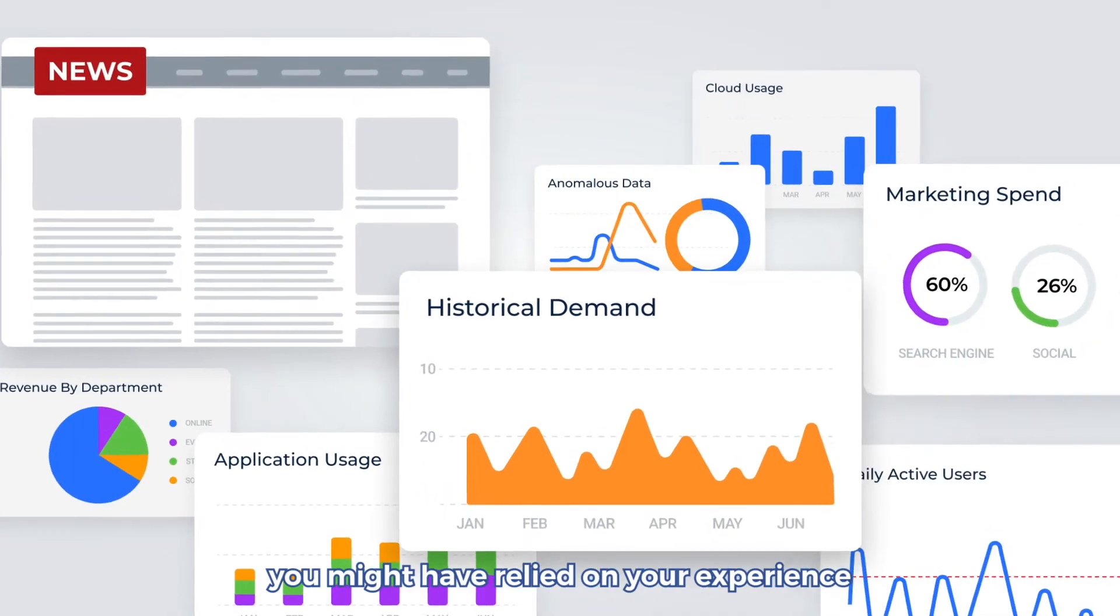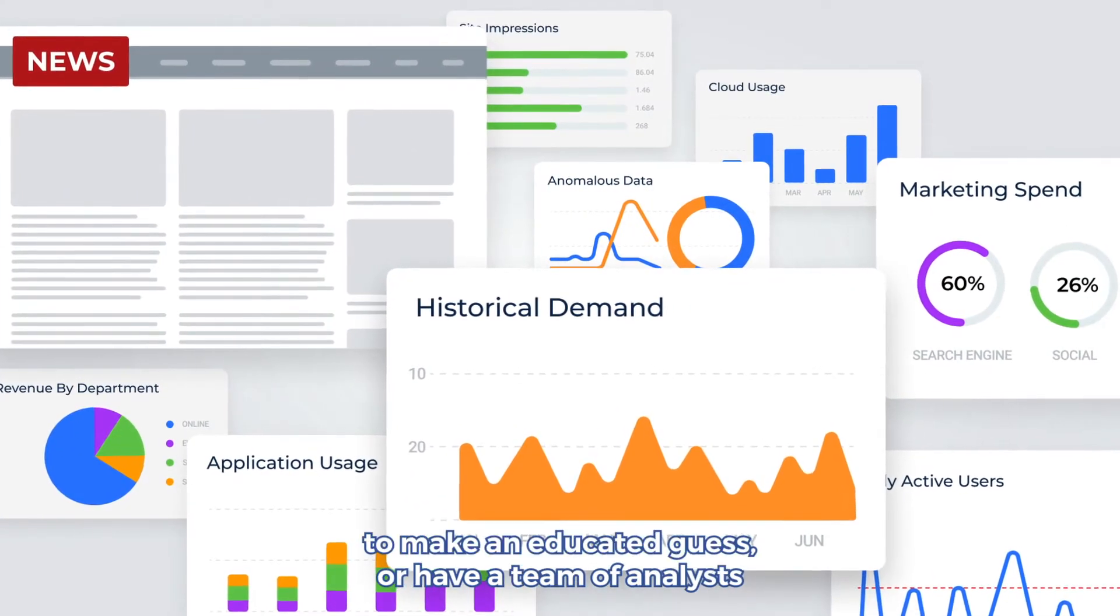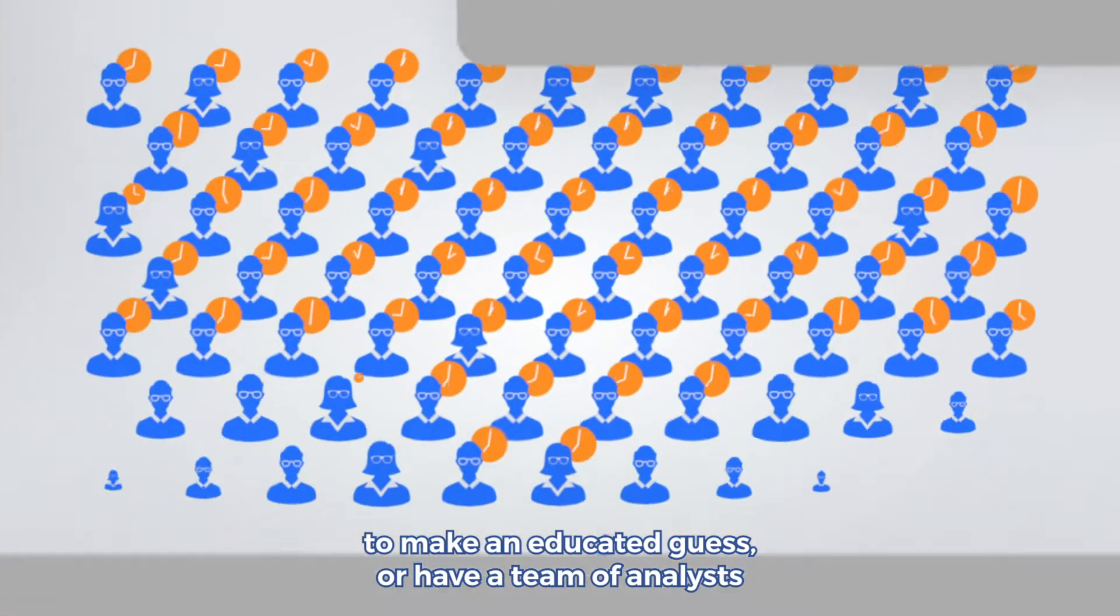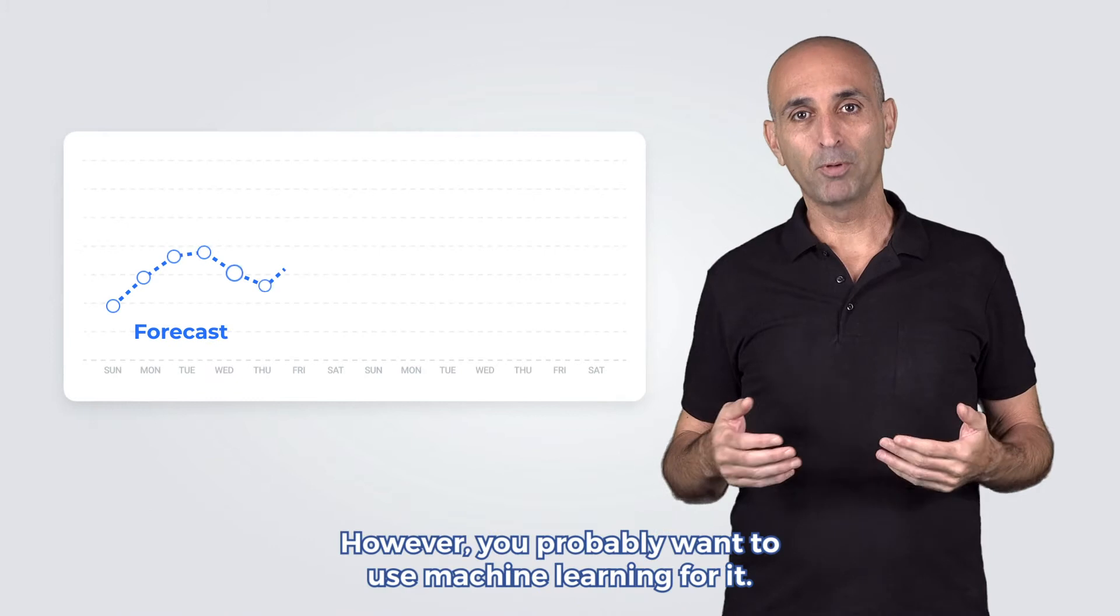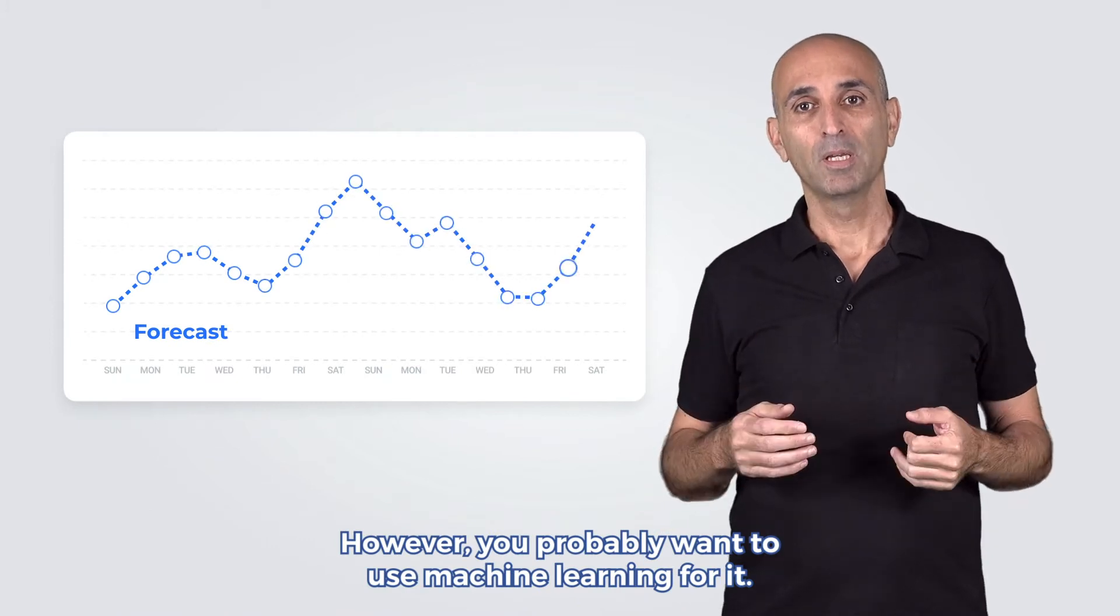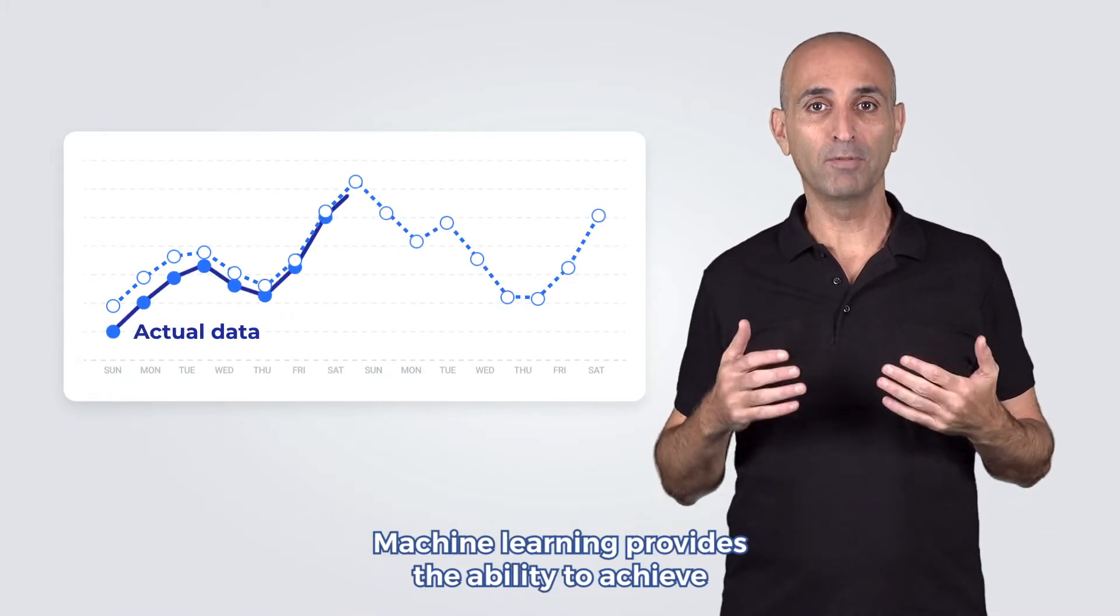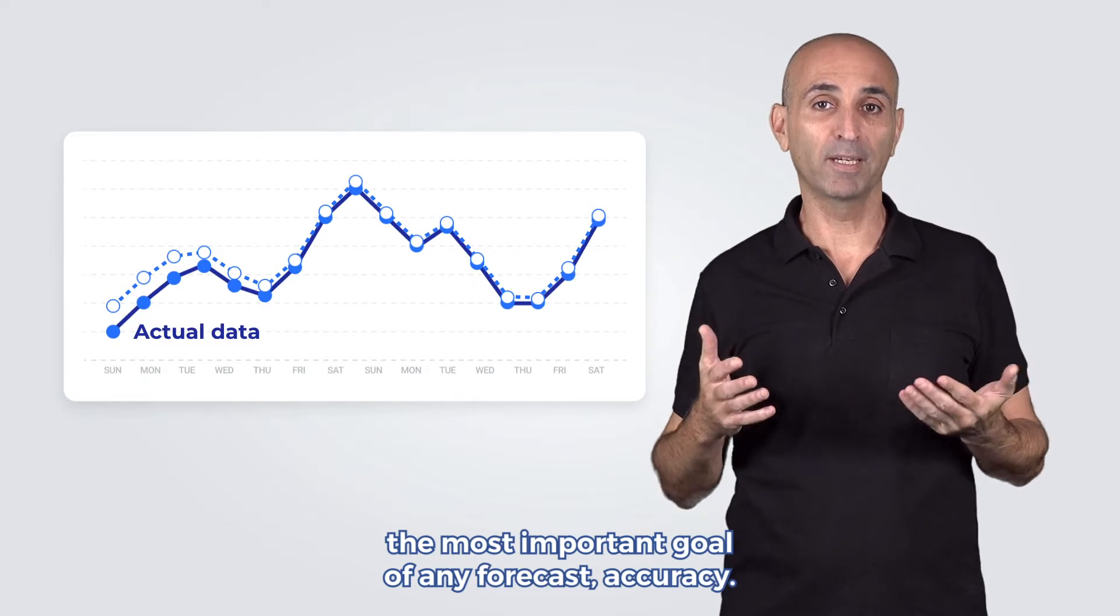When tasked with forecasting you might have relied on your experience to make an educated guess or have a team of analysts take a few weeks to build a forecast. However, you probably want to use machine learning for it. Machine learning provides the ability to achieve the most important goal of any forecast: accuracy.